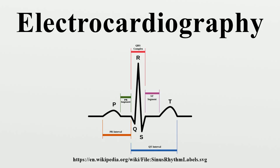An EKG tracing is affected by patient motion. Some rhythmic motions can create the illusion of cardiac dysrhythmia. Artifacts are distorted signals caused by secondary internal or external sources, such as muscle movement or interference from an electrical device.